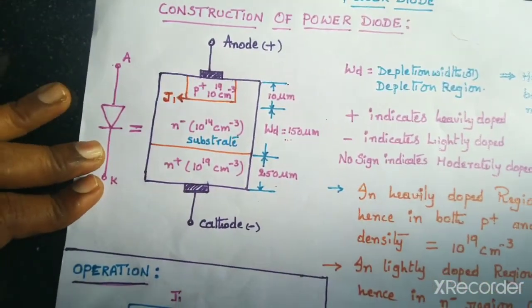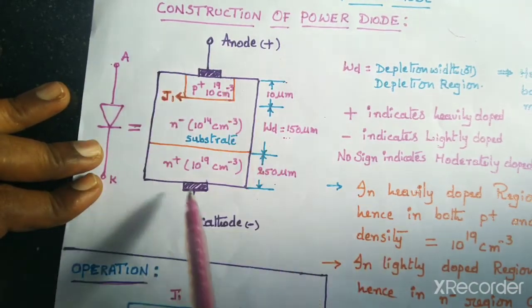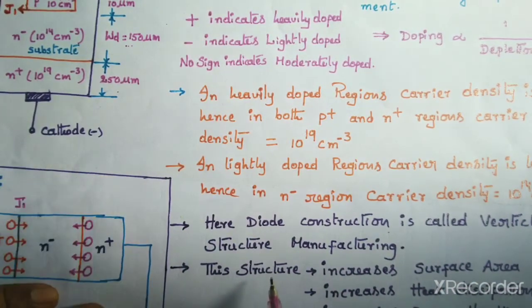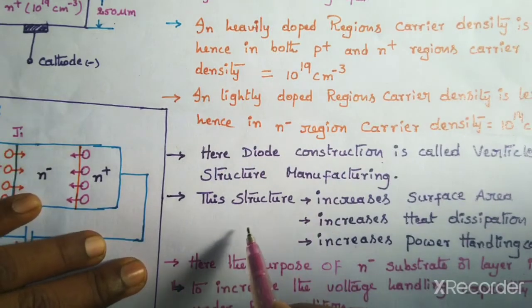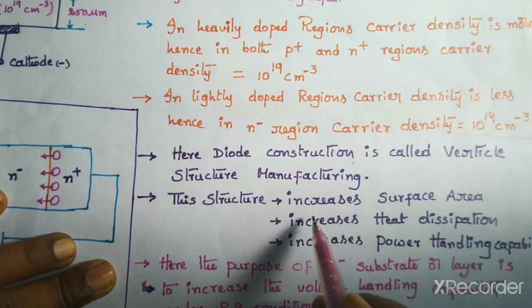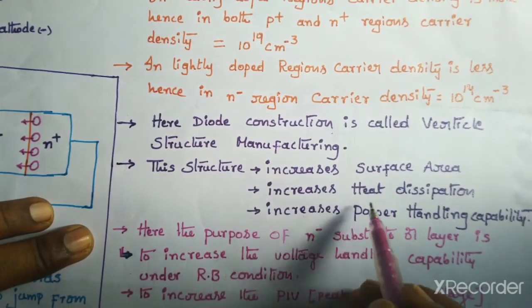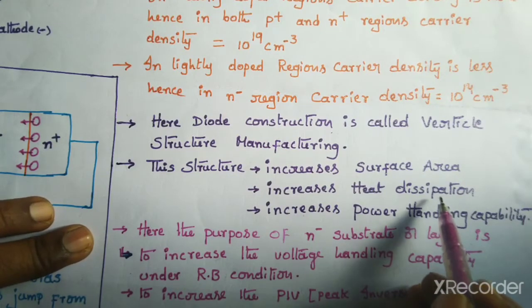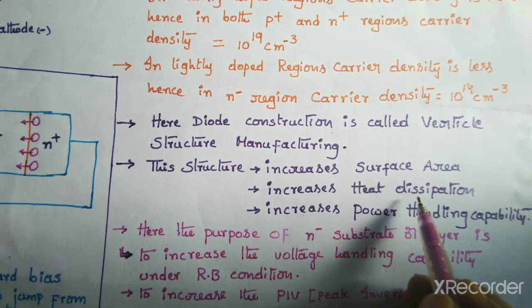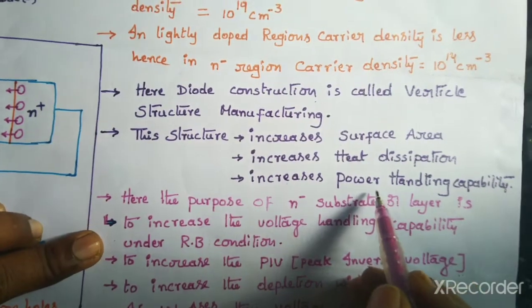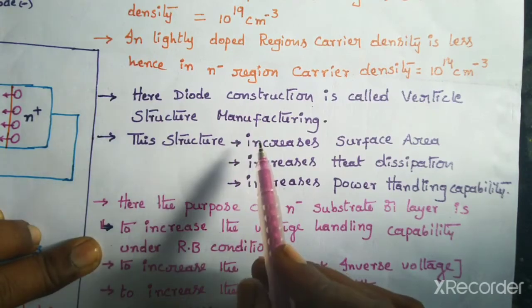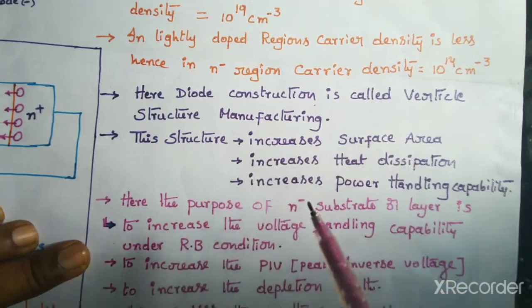This construction design is called vertical construction. In this vertical structure manufacturing, the structure increases the surface area. The main advantage of this vertical structure is it increases the surface area as well as increases heat dissipation. The withstandability of heat will get increased, and it also increases power handling capability. These are the advantages of manufacturing the power diode in a vertical structure.